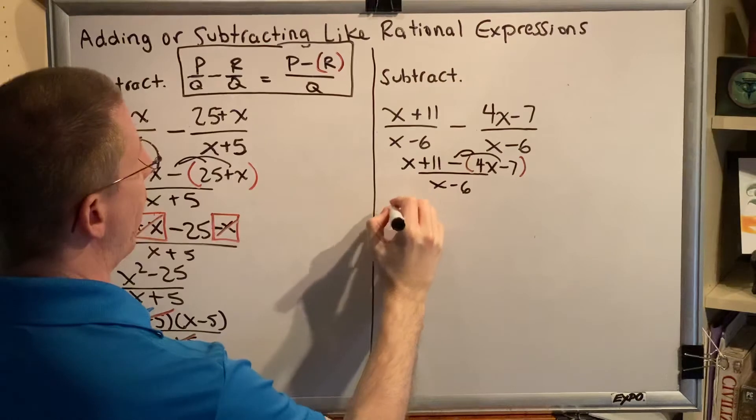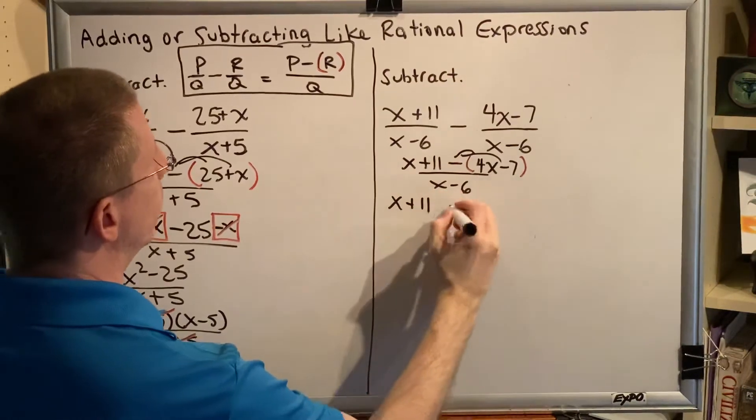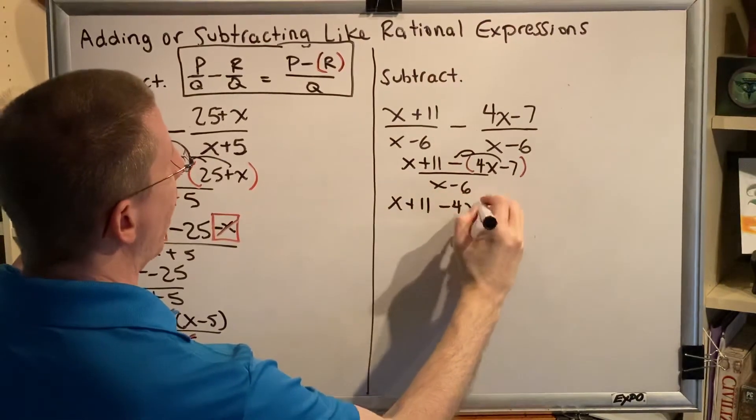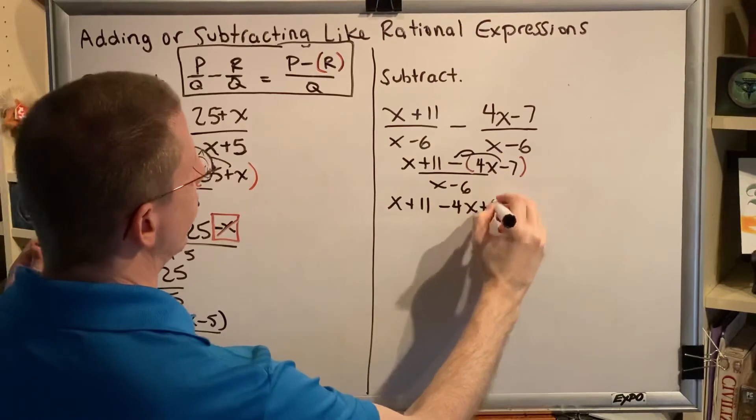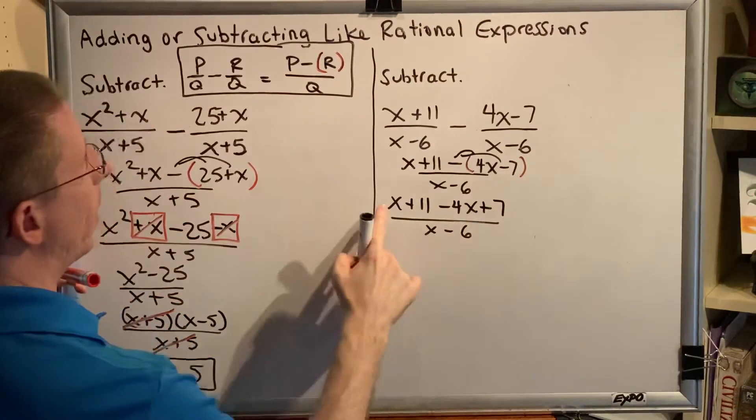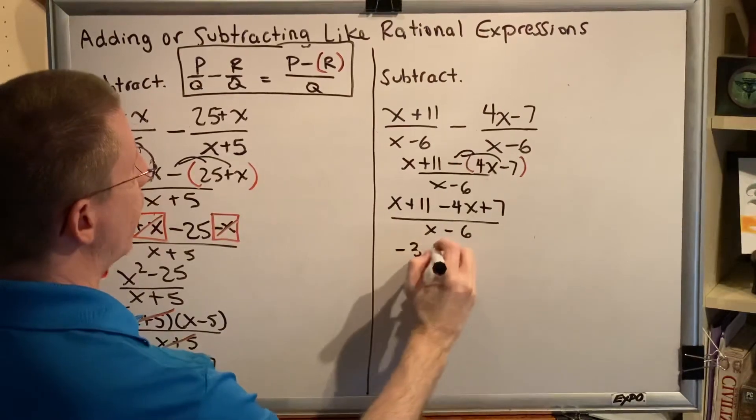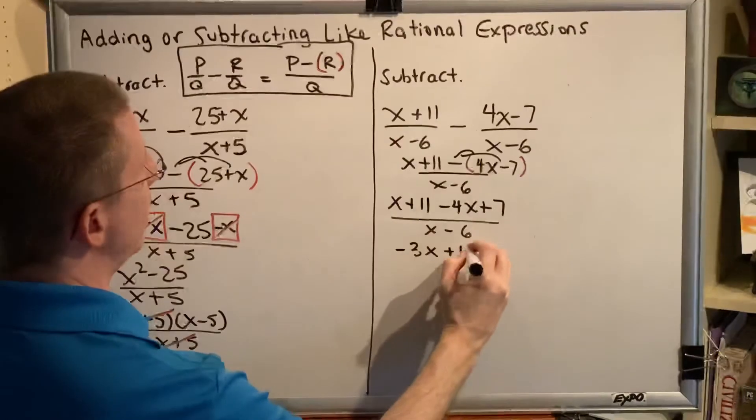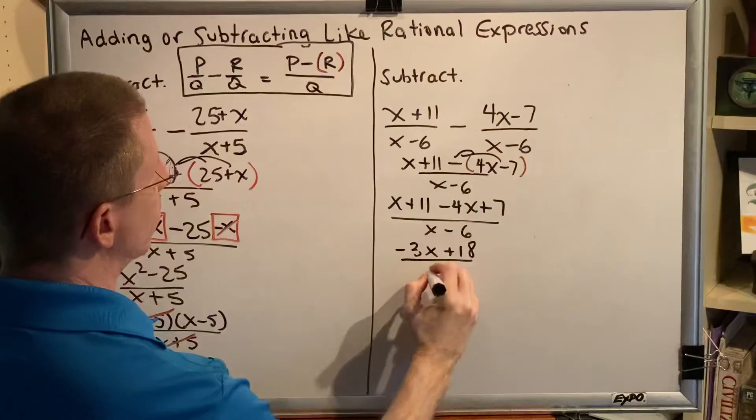So we get x plus 11 minus 4x plus 7 over x subtract 6. Combining like terms in the numerator, we get negative 3x plus 18 over x minus 6.